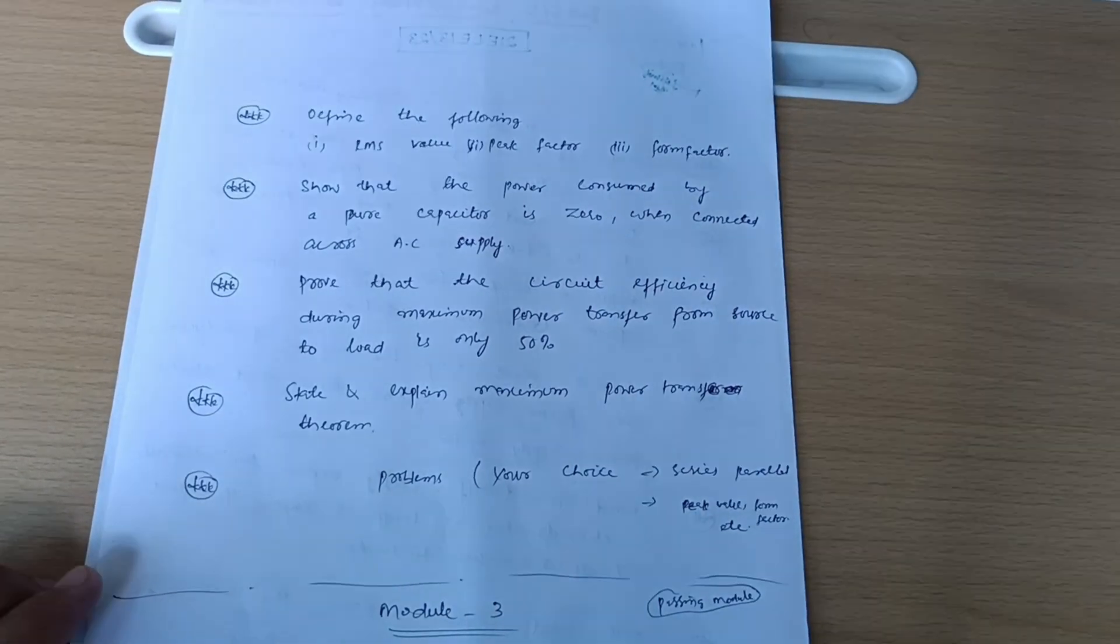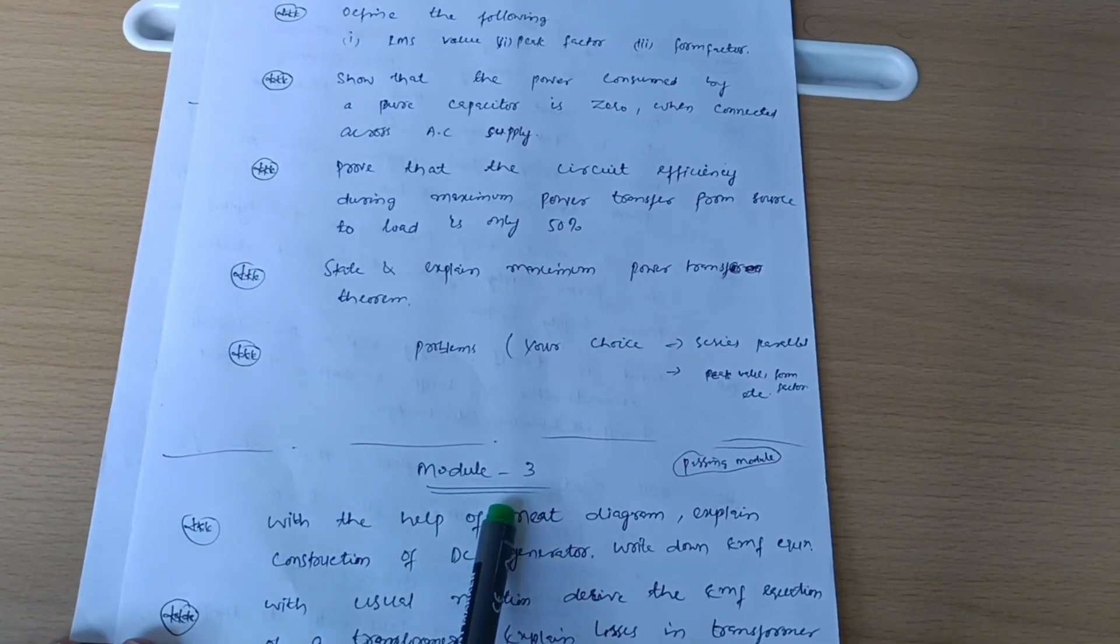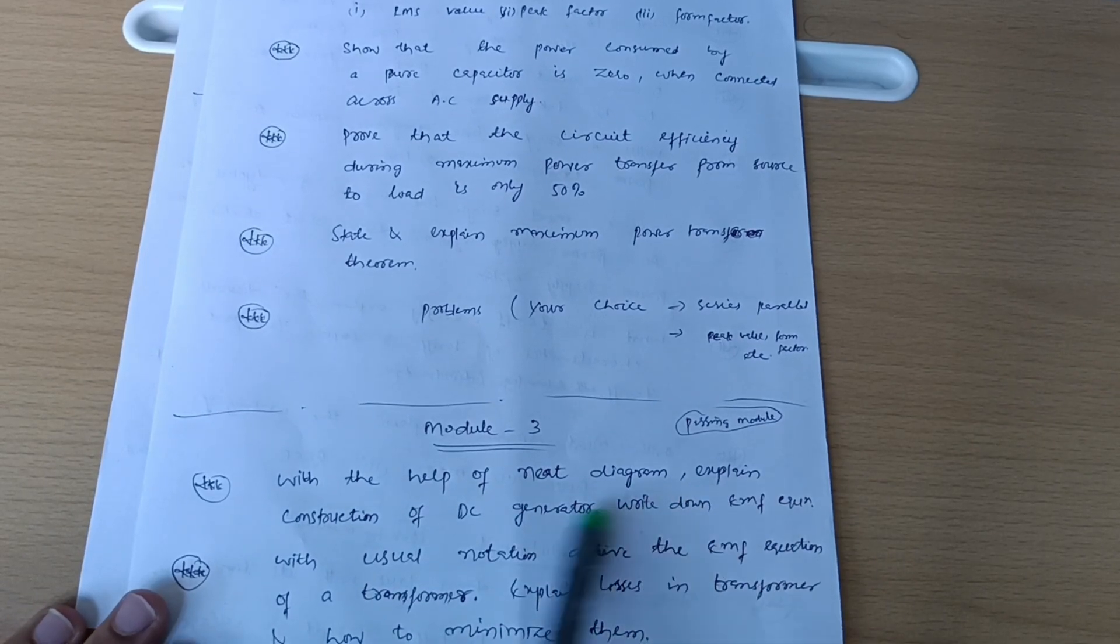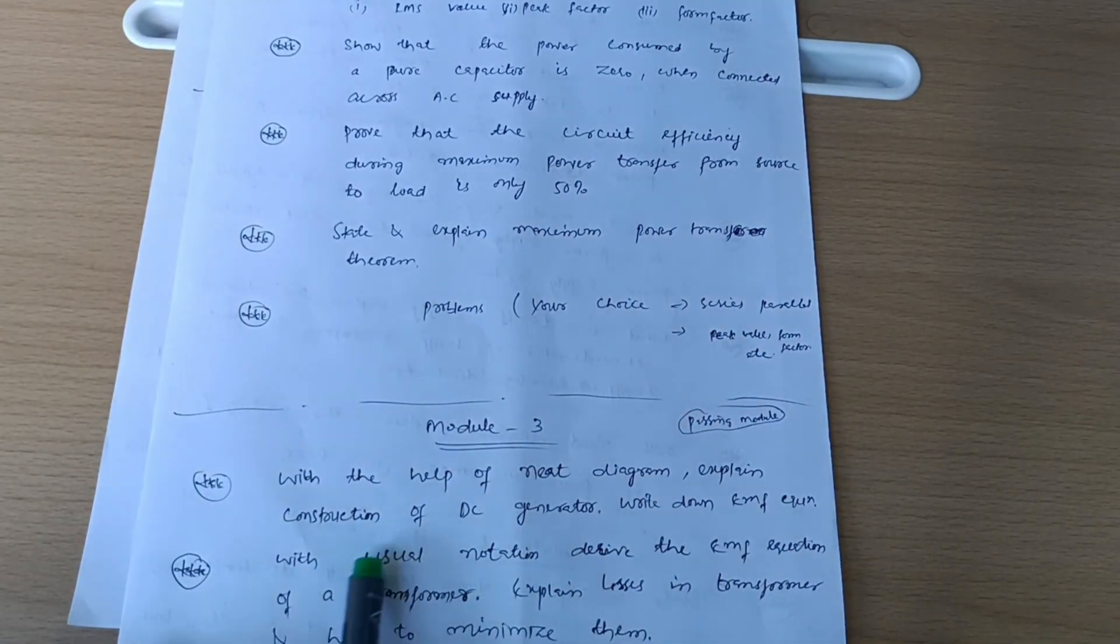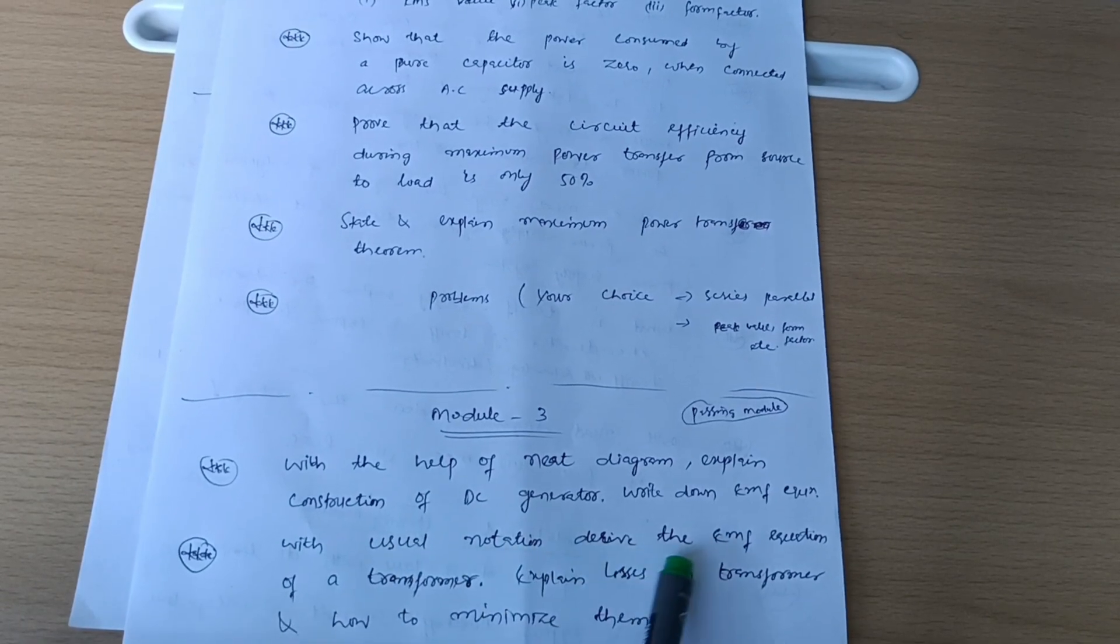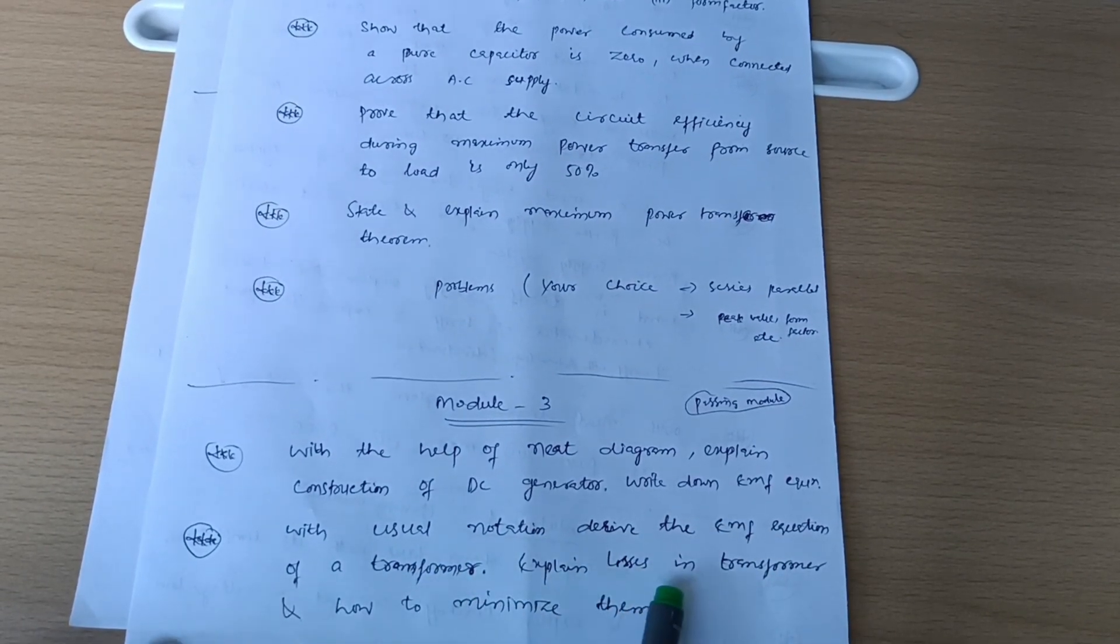Next is Module 3. With the help of neat diagram, explain construction of DC generator. Write down EMF equation with the usual notation. Derive the EMF equation of a transformer. Explain losses in transformer and how to minimize them.